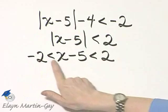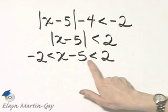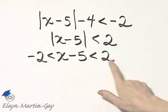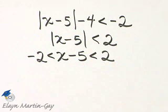So I have negative 2 less than x minus 5 less than 2. And notice this is the compound inequality now that we will solve.